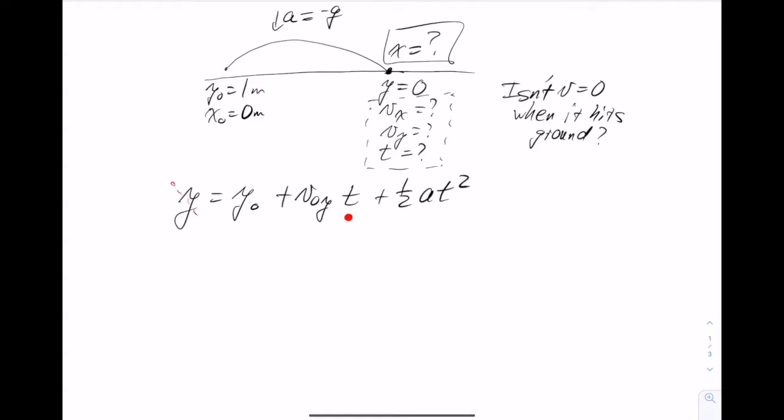So before I do that, I like to cross out anything that's equal to zero. So in this case, the final position is equal to zero. And then to use the quadratic formula, we need to put it in the order the mathematicians like, which is highest order first. So that's one half a t squared plus v0y times t plus y0.